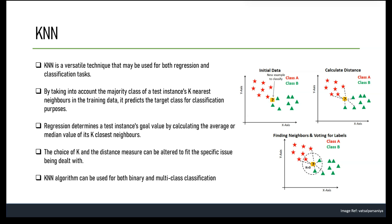Additionally, KNN cannot handle missing data or categorical variables directly and may require pre-processing and feature engineering. One more advantage of KNN is that it can handle multiple class problems. In binary classification, the goal is to classify instances into one of two classes such as yes or no. The KNN algorithm determines which of these two classes a new instance belongs to based on the class label of its K nearest neighbors.